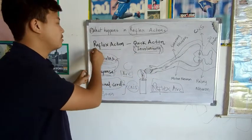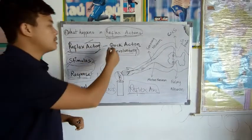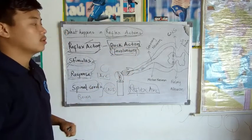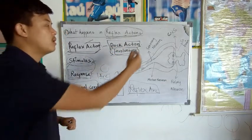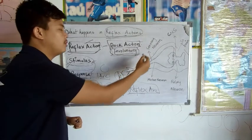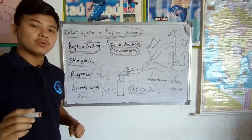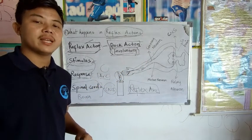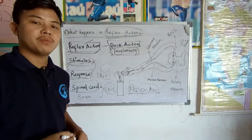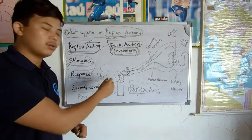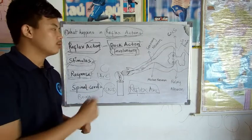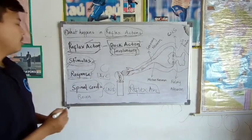Reflex action is a quick action or an involuntary action. Quick actions means a very fast movement, and involuntary actions are those which happen unknowingly. For example, the blinking of an eye, or when you touch a hot object you lift your hand very quickly without thinking. These are known as involuntary actions.